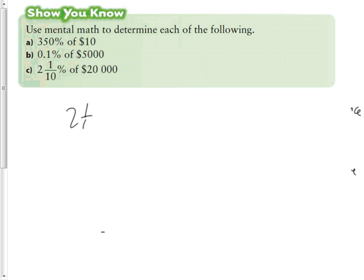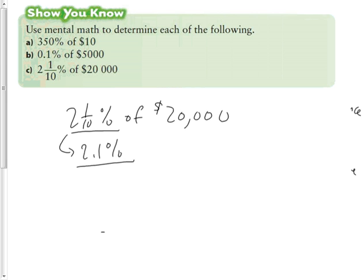What is two and one-tenth percent of $20,000? For this one, the first thing you really need to do is if you have a fraction in your percentage, you should always change that to a decimal version. So 2 1/10%, these are the same number—two and a tenth.